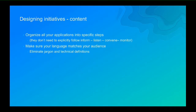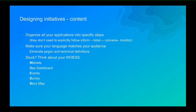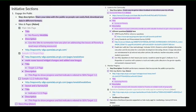We want to make sure our language matches our audience — eliminate any jargon or extremely technical definitions so everyone really understands what we're talking about. If you're not sure where to start or what apps might be useful, think about our WOES: Website, Ops dashboard, Events, Surveys, and Story maps. Those are the five pillars of what we work with and different adaptations and configurations of those things. When starting your initiative, you're not starting in the tech — you're starting on paper, in meetings, crafting this idea and this flow. Then when you're ready, you put it all in the tech.